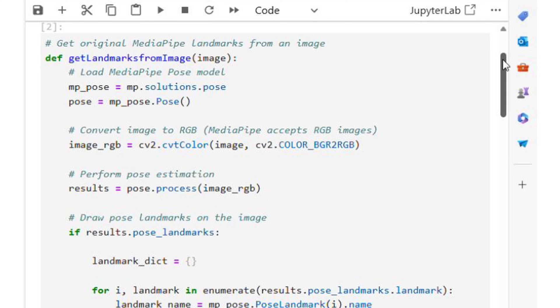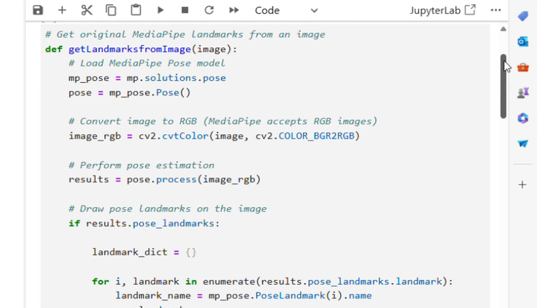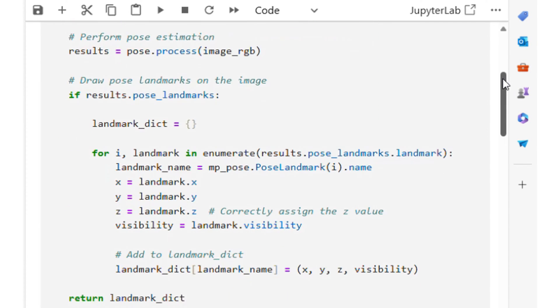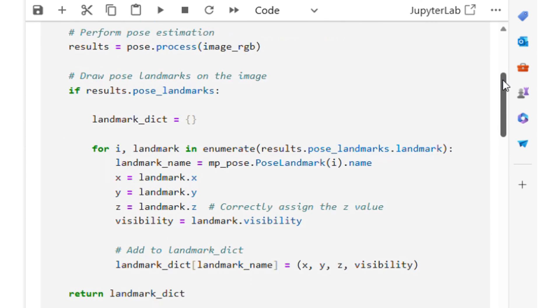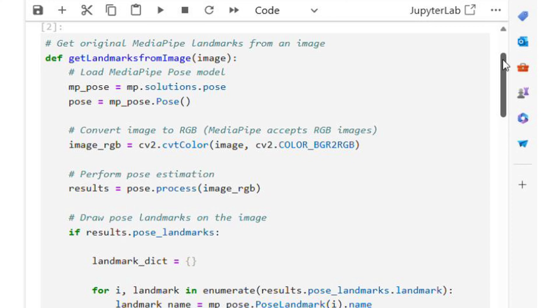Here, I have written a function to extract the original MediaPipe landmarks from an image. This function will load the MediaPipe pose model, perform pose estimation, and return a dictionary of detected landmarks along with their coordinates and visibility scores. I will use this function later, and its functionality will become clearer then.